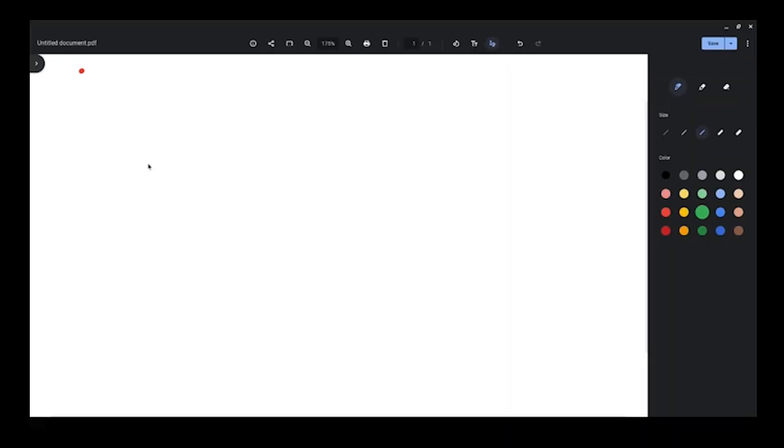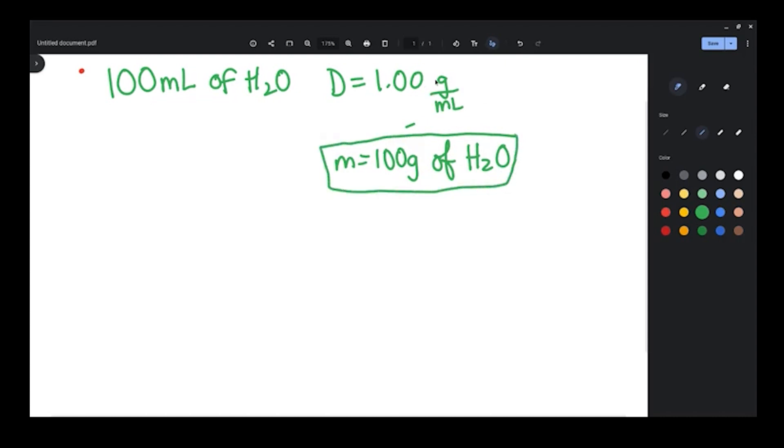Here we are to do the math. We are going to number one, determine the mass of the hot water we used initially. We began with 100 milliliters of water. And if the density of water is one gram per milliliter, then we would have exactly 100 grams of water. There is really no need to do any calculation because it is a one-to-one.